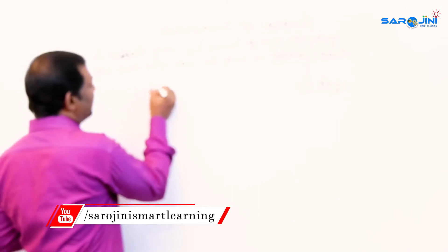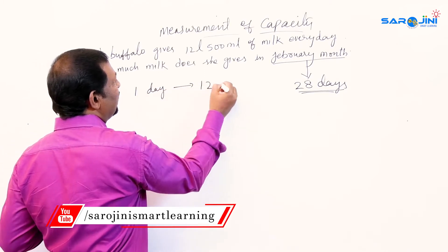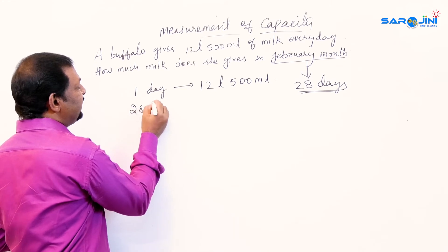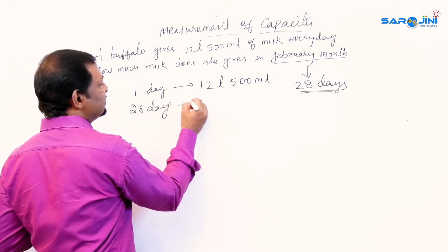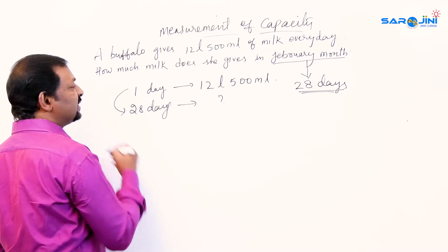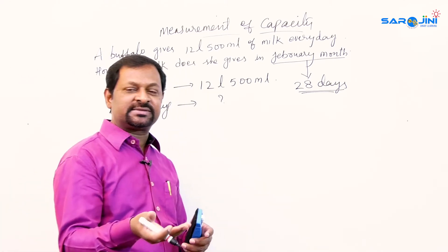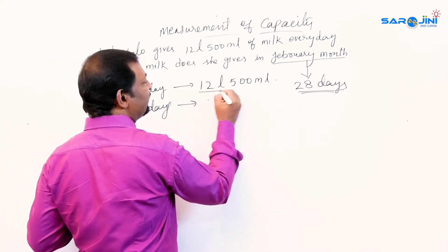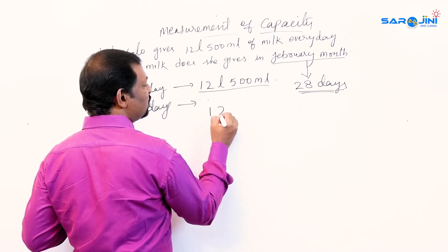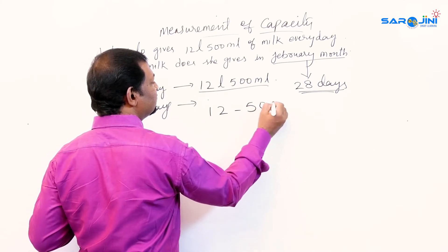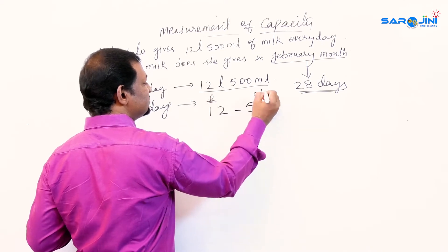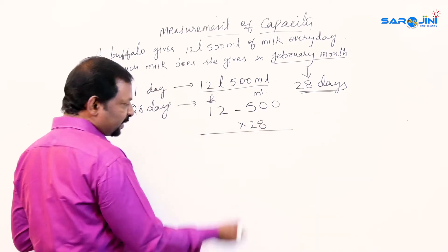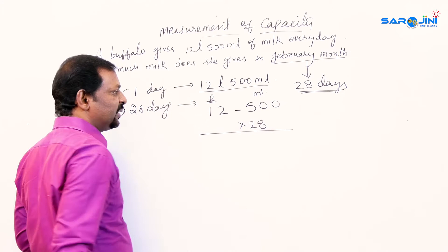So there are 28 days in February. The buffalo gives 12 liters 500 milliliters in one day, and we need to find the total for 28 days. Since the number of days increases, the quantity of milk also increases, so this is a multiplication problem. We write 12 liters 500 milliliters multiplied by 28.